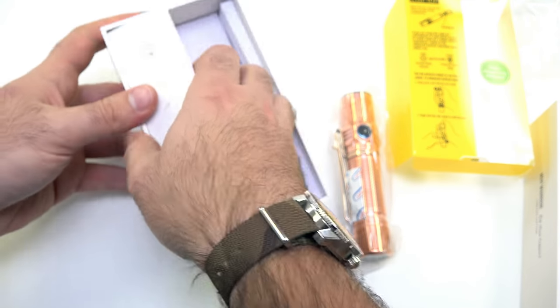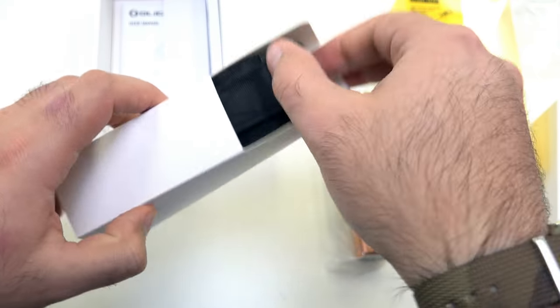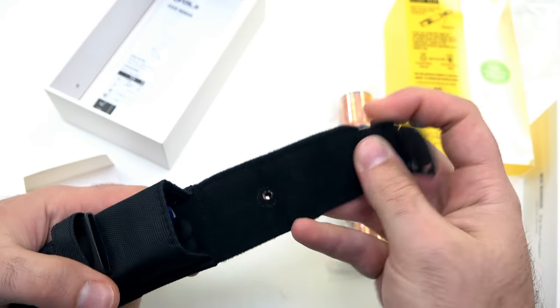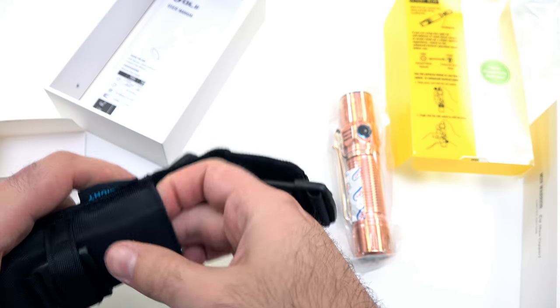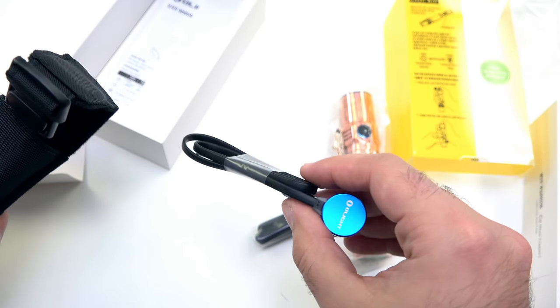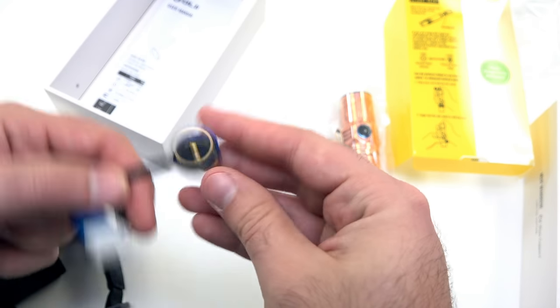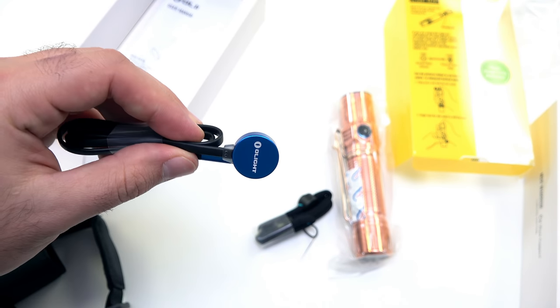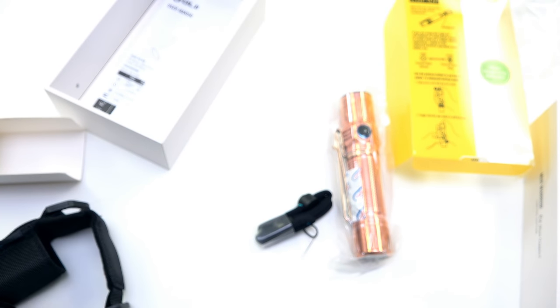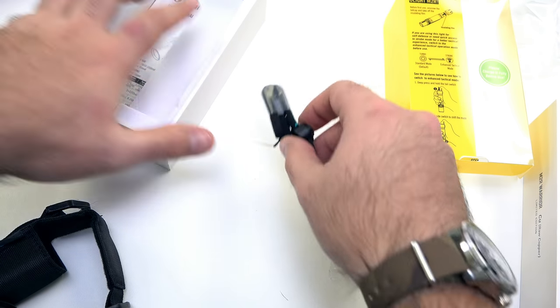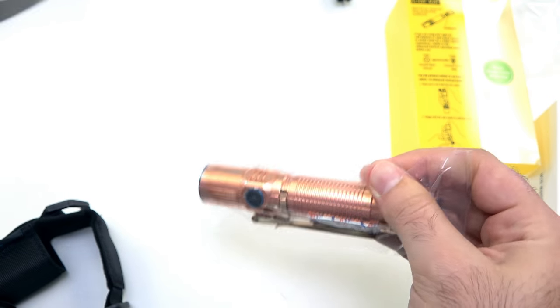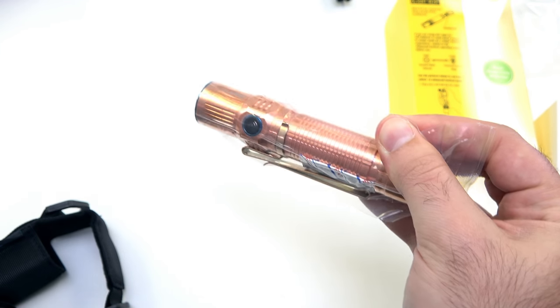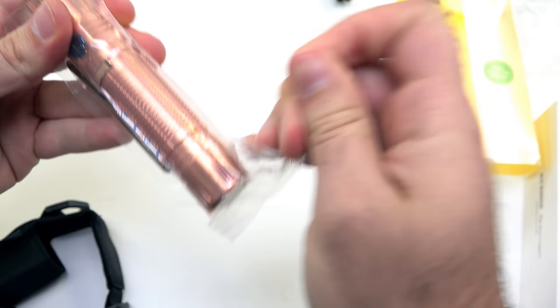This does include the holster, same holster that comes with the standard M2R. We have the lanyard here as well, and then we have the charging cable here, magnetic charging cable. It still works just fine even though this is made out of copper.